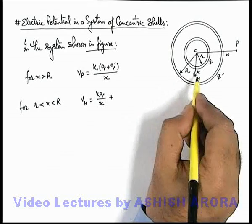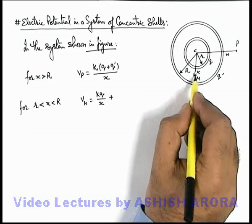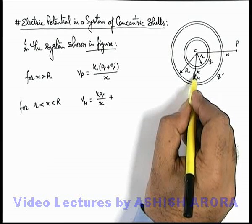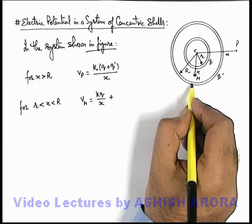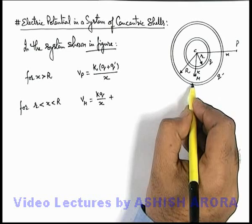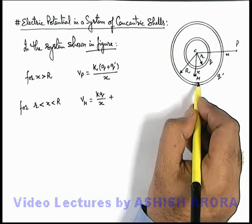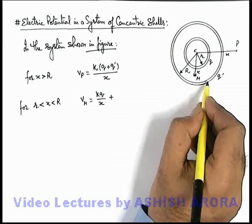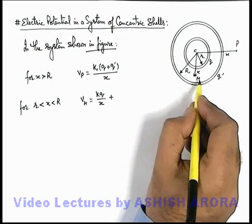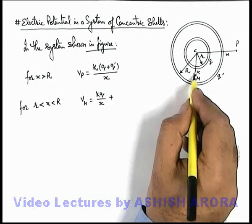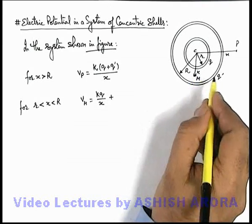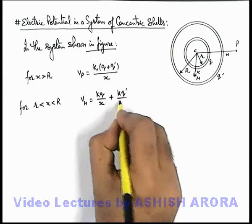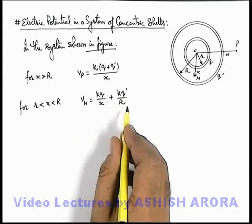Point M is an interior point of the outer shell on which charge q dash resides, so its potential will be exactly equal to that of its outer surface. Because inside a hollow sphere, at every point the potential due to charges on the sphere equals that of the surface — all interior points are equipotential. So potential at M due to q dash is kq dash / capital R. The total potential at M is kq/x + kq dash/R.